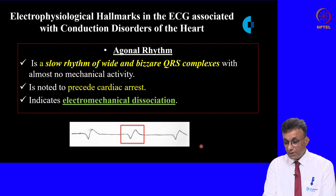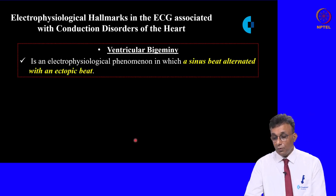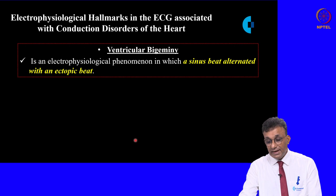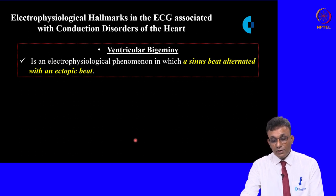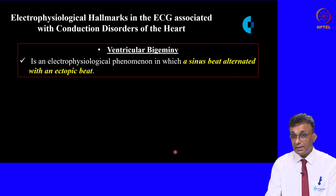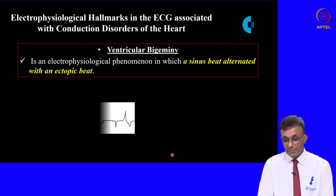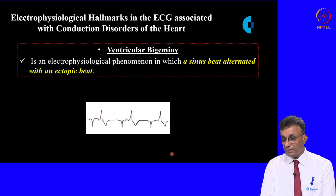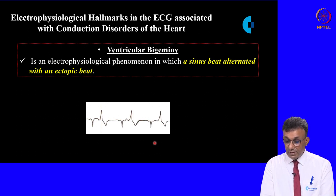This is a classical tracing of agonal rhythm. Ventricular bigeminy is an electrophysiological phenomenon in which a sinus beat alternates with an ectopic beat. This tracing shows a sinus beat alternating with an ectopic beat — a classical example of ventricular bigeminy.